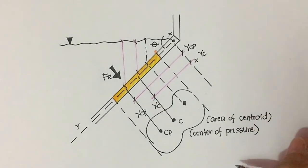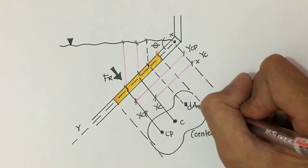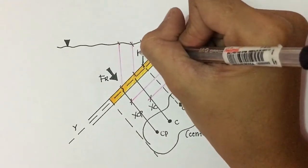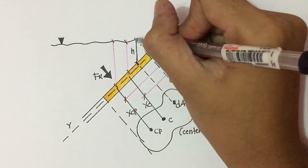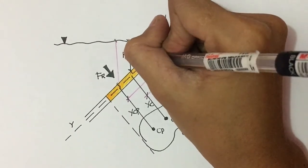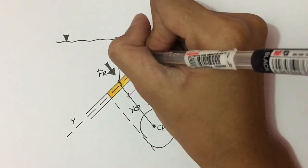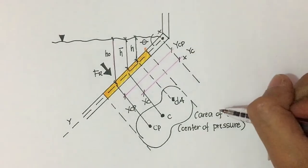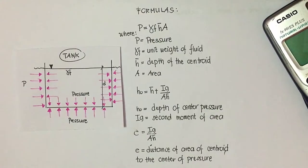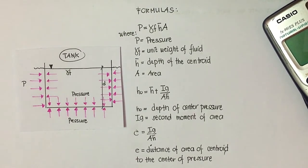Now, take a small differential element dA at depth H. H-bar is the depth from the center of the centroid, and HO is the depth from the center of pressure. These are the formulas used in determining the pressure, depth of the center of pressure, and the distance from the area of the centroid to the center of pressure.